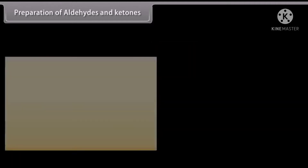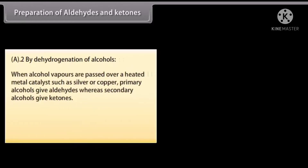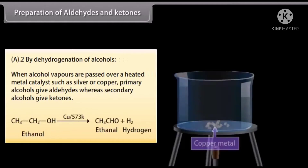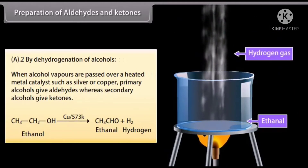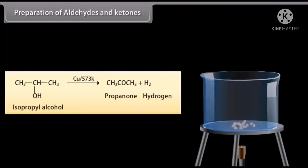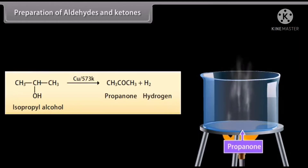By dehydrogenation of alcohols: when alcohol vapors are passed over a heated metal catalyst such as silver or copper, primary alcohols give aldehydes whereas secondary alcohols give ketones. When vapors of ethanol are passed over copper, ethanal is formed and hydrogen gas is released. When vapors of isopropyl alcohol are passed over copper, propanone is formed and hydrogen gas is released.